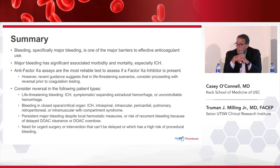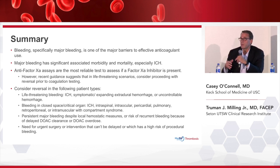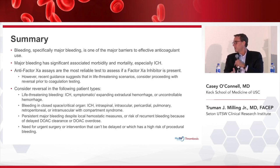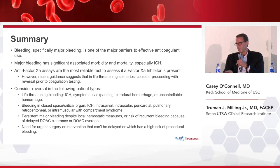In summary, major bleeding is one of the major barriers to effective anticoagulant use, and that's a significant problem. Data from a few years ago showed that only about half of AFib patients with CHADS scores of two or greater who qualify for anticoagulation by guidelines are actually anticoagulated. A back-of-the-napkin calculation shows that if only half the people with AFib who should be anticoagulated are, it represents a couple hundred thousand unnecessary strokes a year — a huge, potentially preventable burden of thromboembolic disease.